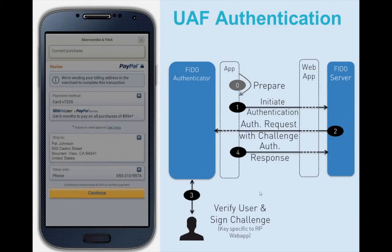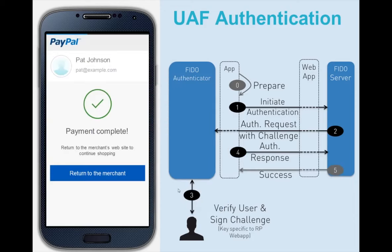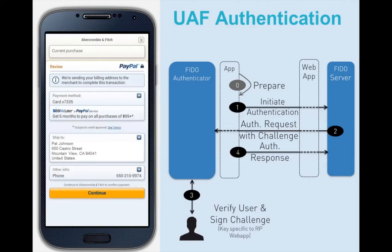The response is then sent to the server, which verifies it. The response includes the signed data object with the signature algorithm, hash of the final challenge, authenticator random, signature count, and the signature. The final challenge is the combination of the application ID, facet ID, channel binding information, and the random number generated by the server. Once the FIDO server verifies all this information, it indicates success or failure to the application — in this case, success: payment complete.